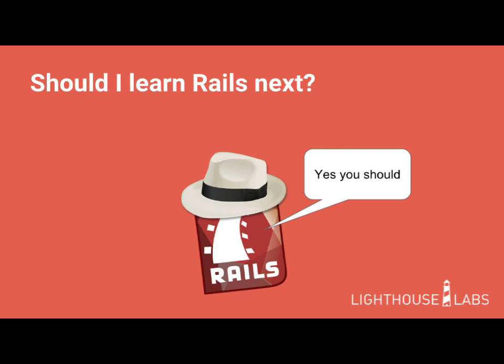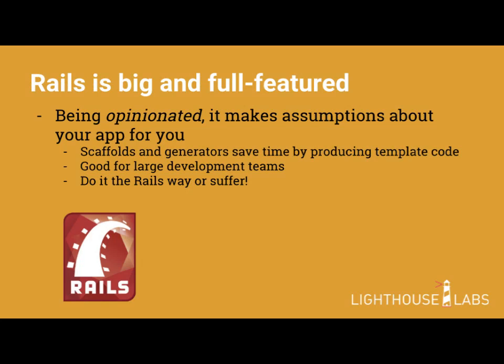Rails — I think the strength there is that you're going to learn some good practices. It's called opinionated, and it punishes you if you act against the prevailing opinion. Rails is a very good tool for teams because you make sure that everyone's following the same practices. It's very big, very full-featured — it creates your models and skeleton applications automatically. As I said, very good for large development teams because it just enforces a certain code of development behavior. 'Do it the Rails way or suffer,' it says.